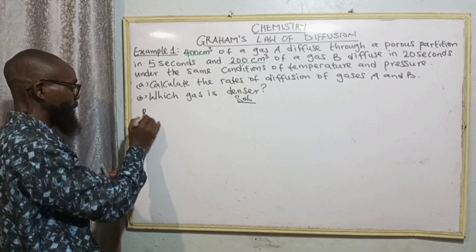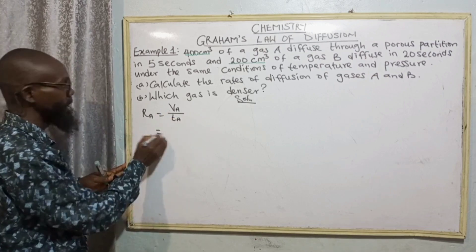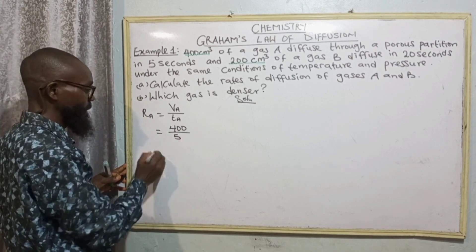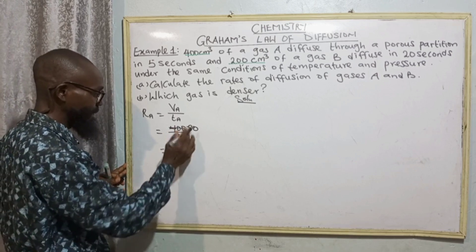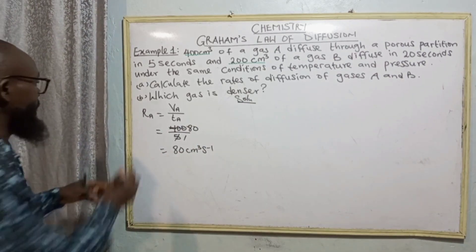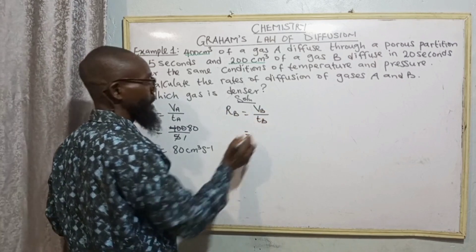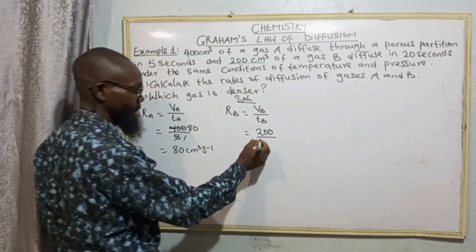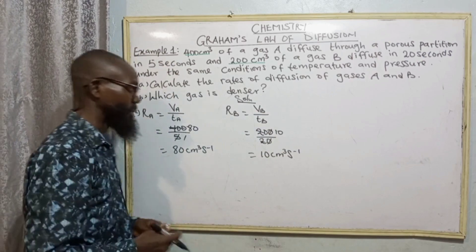For gas A, rate of diffusion of gas A equals volume of gas A over the time taken for gas A. Volume of gas A is 400 cm³ divided by time for gas A which is 5 seconds, giving 80 cm³ per second. That is the rate of diffusion of gas A. For gas B, RB equals volume of B divided by time taken for B. Volume of B is 200 cm³ over 20 seconds, giving 10 cm³ per second.